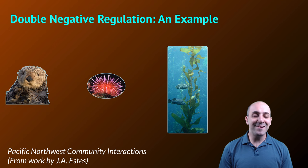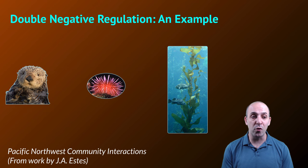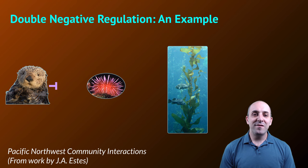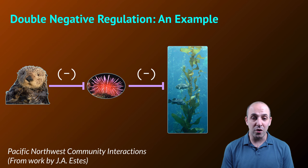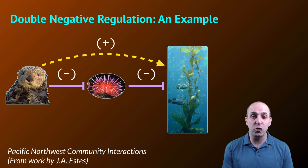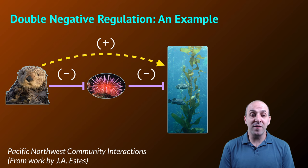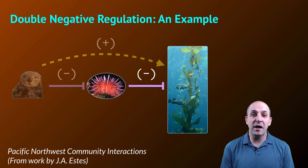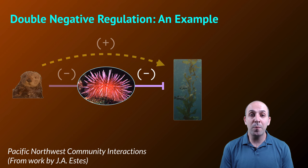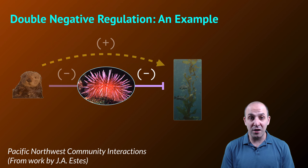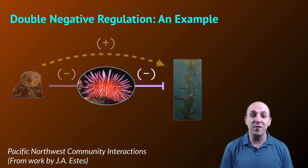Let's take an example from ecology — the interactions in the kelp forest ecosystems of the Pacific Northwest. We're going to look at three components: sea otters, sea urchins, and kelp. Sea otters prey on sea urchins, and sea urchins eat kelp. This is a classic double negative structure. As a result, the presence of sea otters leads to an increase in kelp. The decrease in sea otter populations in the 1900s due to hunting led to an increase in sea urchins, which led to a decrease in kelp. Once sea otters were protected and their populations rebounded, the sea urchin population came back down and kelp increased again. It's a classic example of double negative regulation.